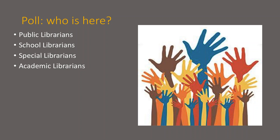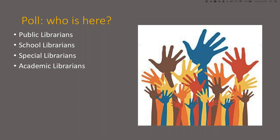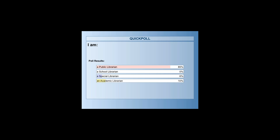So the first thing I want to know is two little polls. The first poll is who is here — I want a sense of the mix of public librarians to school librarians to special to academic. The poll is posted and in progress. About 85% have voted, so let's close that. It says 85% of the audience is a public librarian, 6% are a special librarian, 10% are academic, and we don't have anyone from a school today.